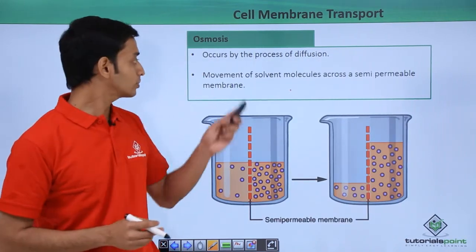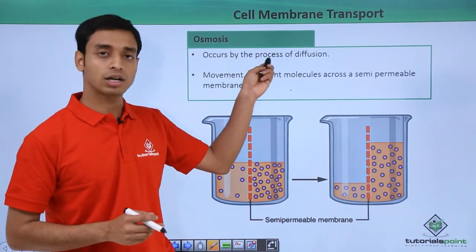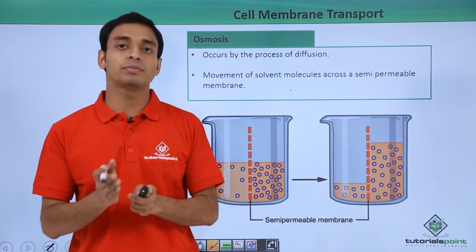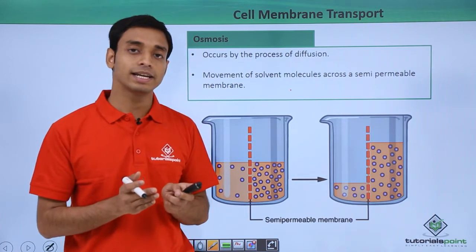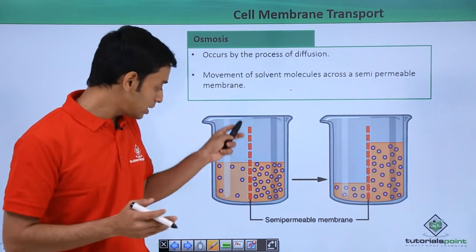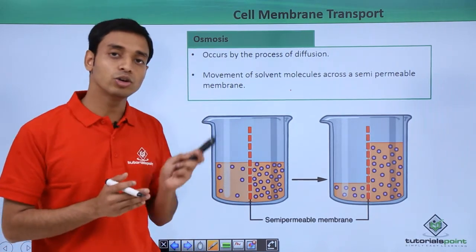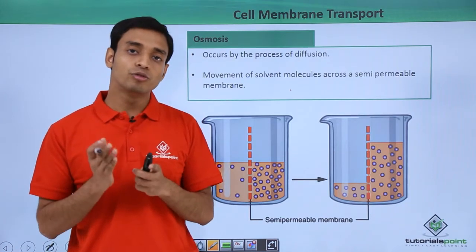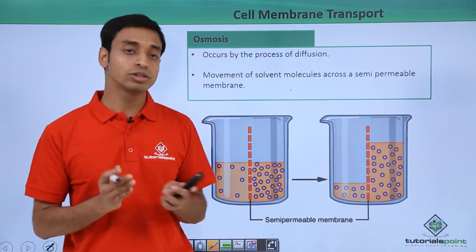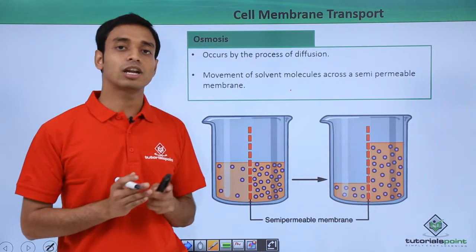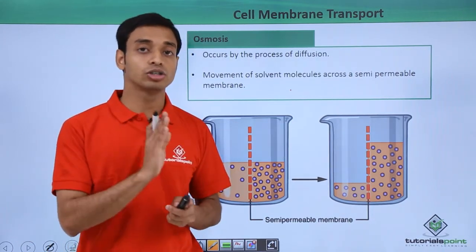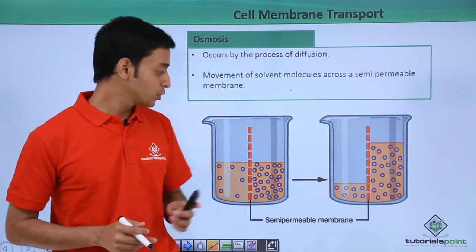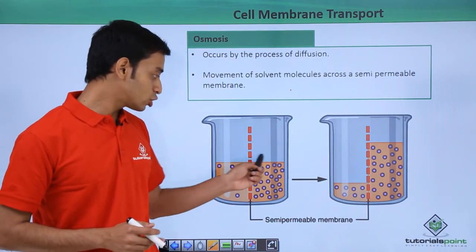The next process is osmosis. Osmosis also occurs by the process of diffusion, but the key difference from passive diffusion is that it happens through a semi-permeable membrane. A semi-permeable membrane allows the movement of only selected molecules — in this case, only solvent molecules — and does not allow the movement of solute molecules.